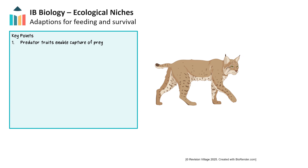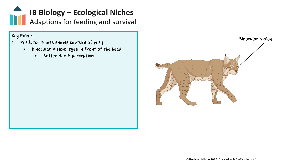Predators are organisms that hunt, kill, and consume other organisms, which are referred to as prey. Both predators and prey have adaptations developed through natural selection to enhance hunting efficiency and survival. Predators possess traits that enable them to detect and capture prey, such as improved vision. Binocular vision, characterized by eyes in the front of the head, provides better depth perception, aiding in capturing prey despite a narrower field of view. They may also have sharp claws or teeth, and typically exhibit stalking behavior and high speed to pursue prey effectively.